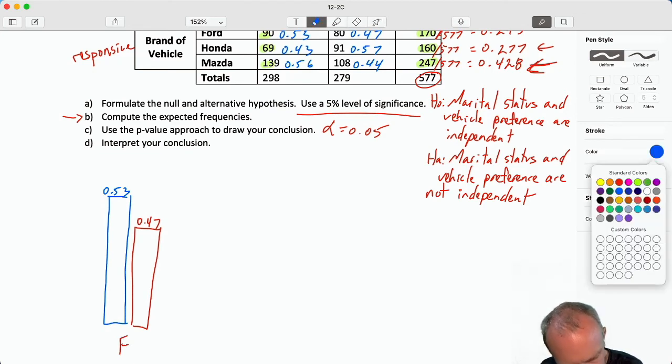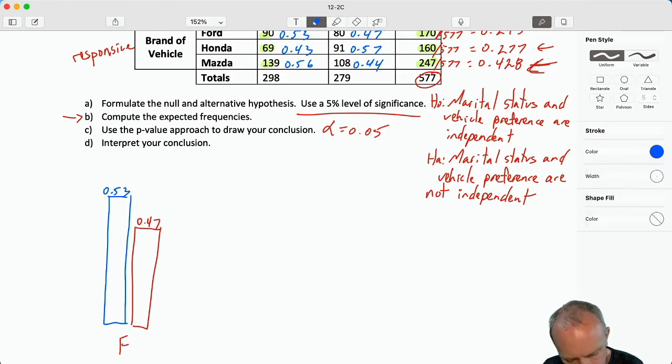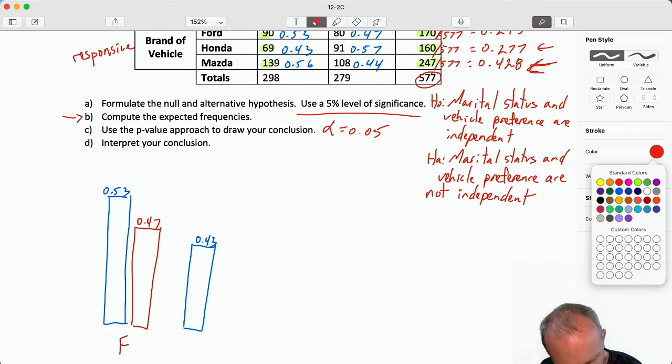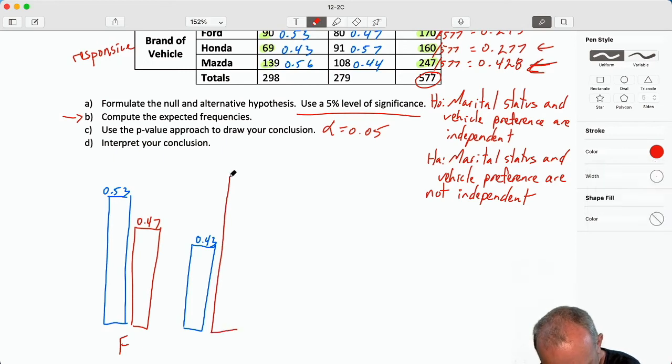Now we'll do the same thing for the Honda. So the Honda for married was 0.43. And for the Honda for the single was 0.57, so that's way up here. And that's the Honda.